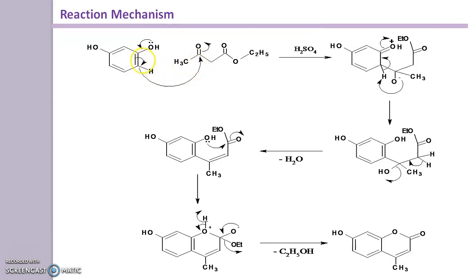So to this ortho position, ethyl acetoacetate is attracted to form this product. Further there is a loss of water molecule and cyclization to form this 7-Hydroxy-4-Methyl-Coumarin.